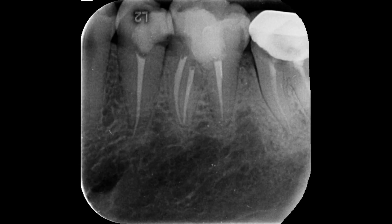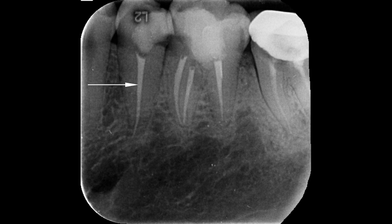This is the final radiograph — the distal view — where you can see all three well-prepared canals in the mandibular first molar tooth. This is the mesiobuccal canal, this is the mesiolingual canal, and this is the distal canal. In the mesial root you can see the two separate canals which end into two separate foramens. And in the second premolar tooth, this is the single well-obturated canal.